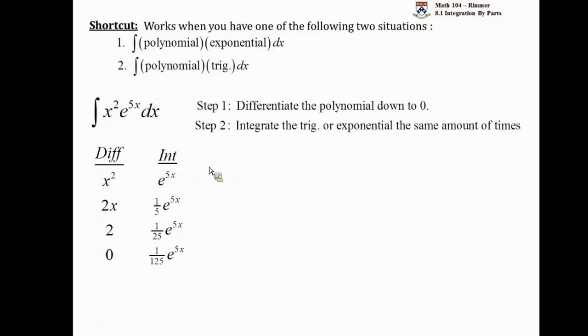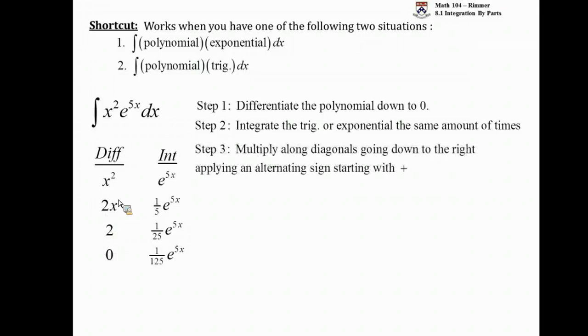Now, final, well this isn't the final step, but the crucial part. How are you going to put together these parts? You do the following. You multiply these two different parts along diagonals that are going down and to the right. You start at the top. And when you make this multiplication, you must also apply a sign after multiplying.